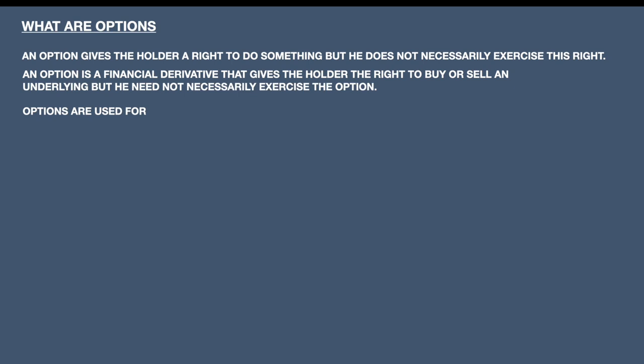Why do options exist? What are the uses of options? The first one is hedging. Suppose you have an underlying stock and you expect that in the near term the stock price may go down. In such a case you would like to hedge your portfolio. You hedge the portfolio by buying a put option. When the market goes down, the put option will give you a certain amount of profit. So options can be used for hedging — so that your portfolio value will not change.